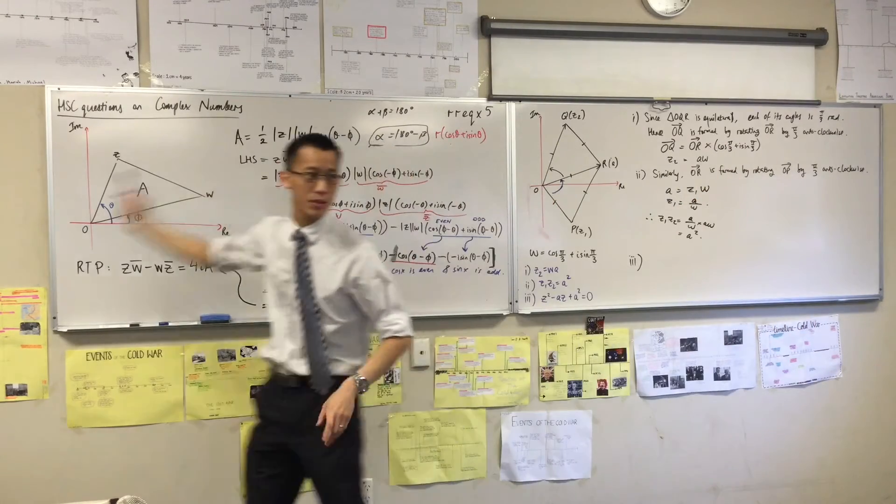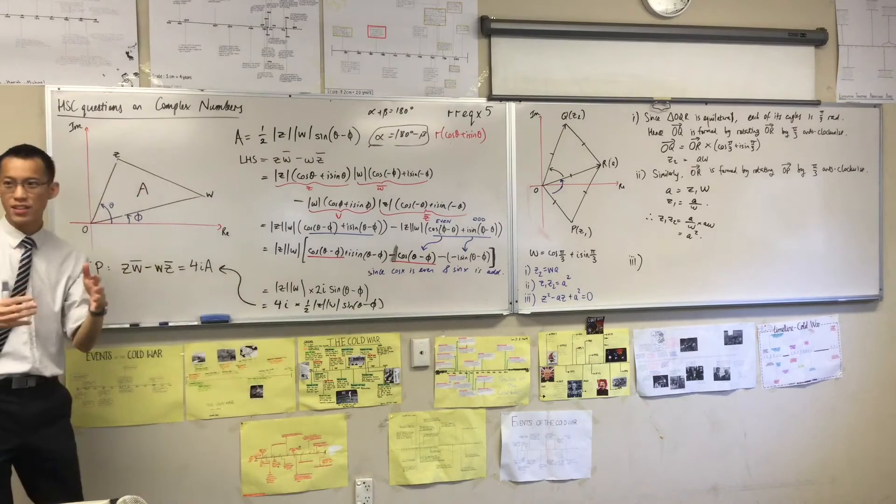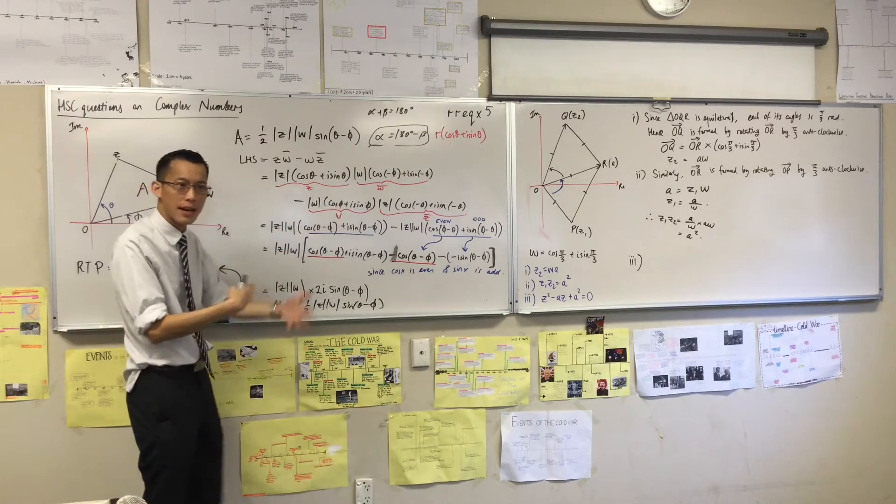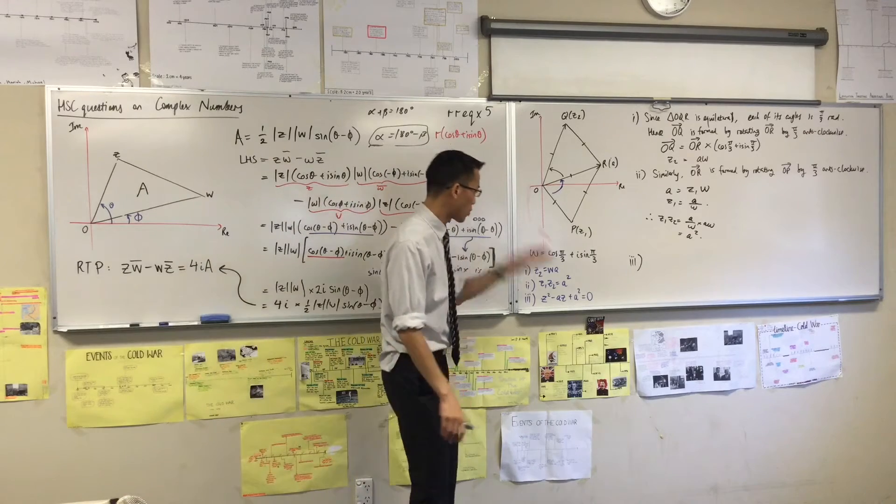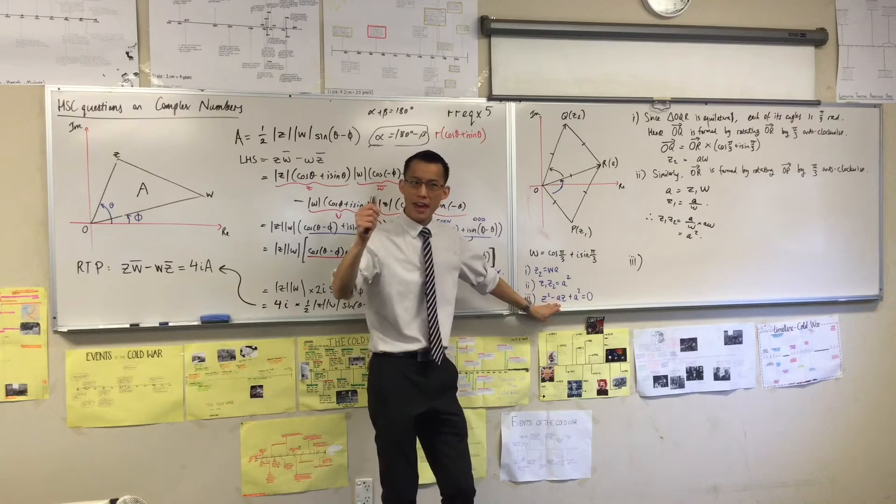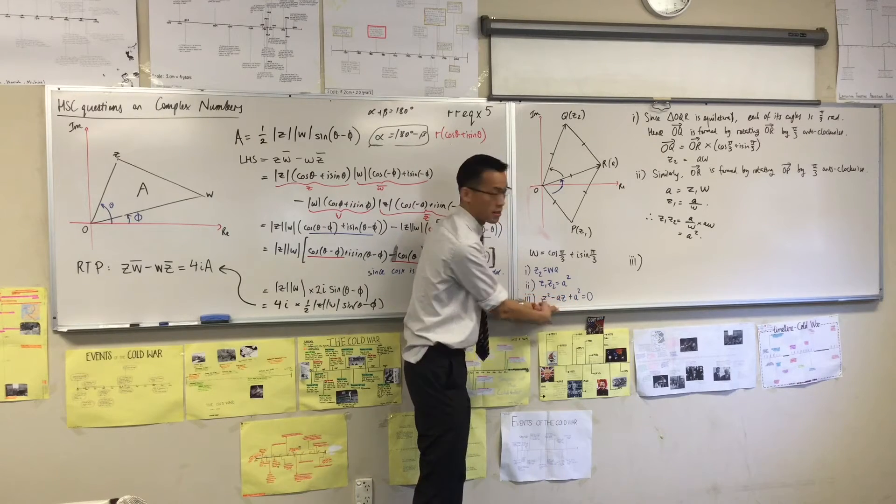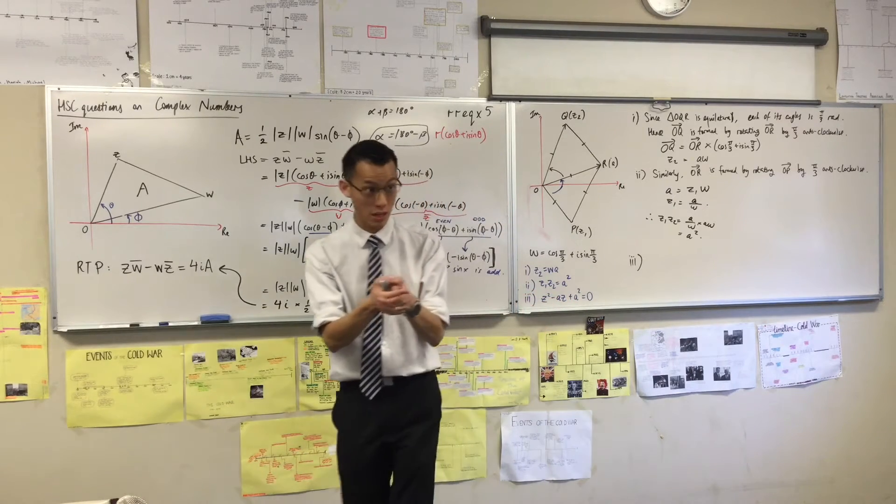Now just like with this question we started with this morning, the main thing is not the doing of the question, it's like, well, where do I even begin? How do I start down this path? So I want you to have a look at this carefully. They're saying show that Z1 and Z2 are the roots for this thing. Does anyone want to make a suggestion? Yeah, you heard up, Harry?